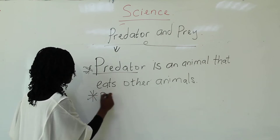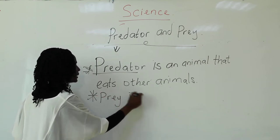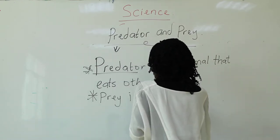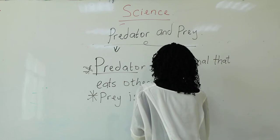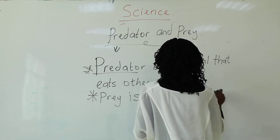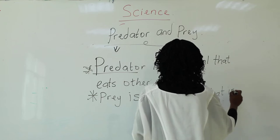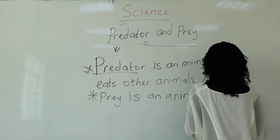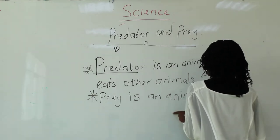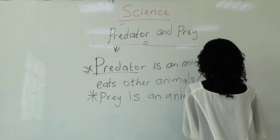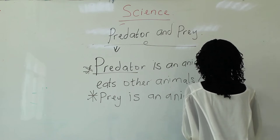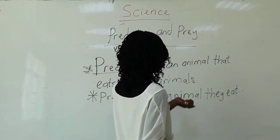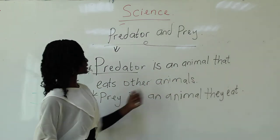Now, what is prey? Prey is an animal that is eaten. So to understand it clearly: a predator is an animal that eats other animals, and prey is an animal that gets eaten.